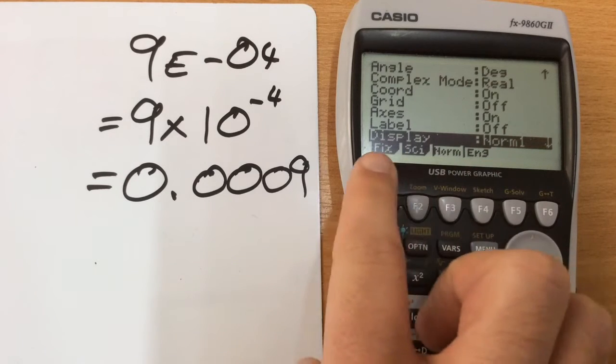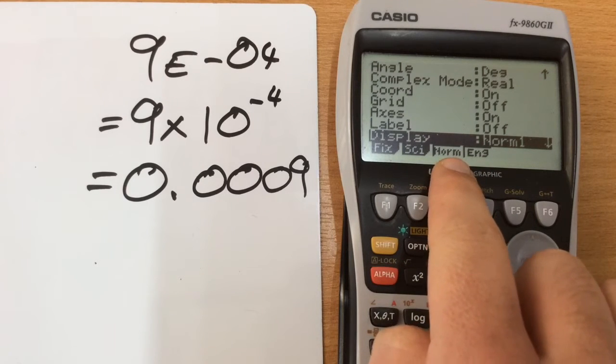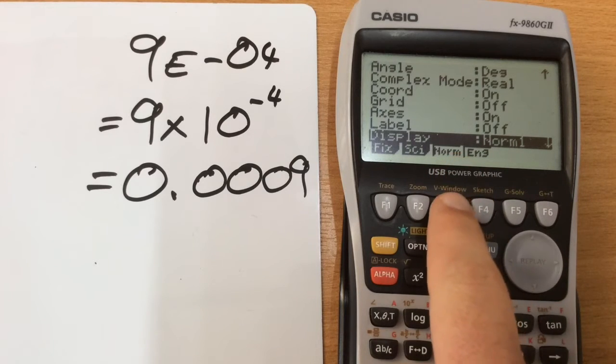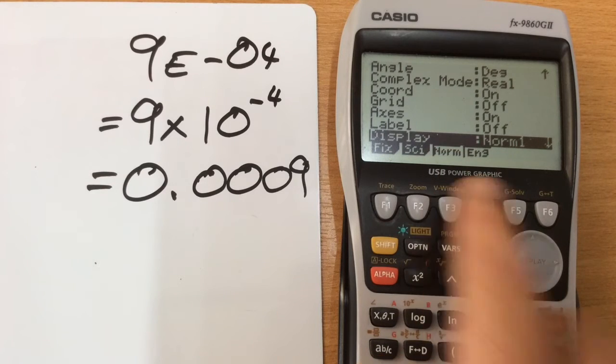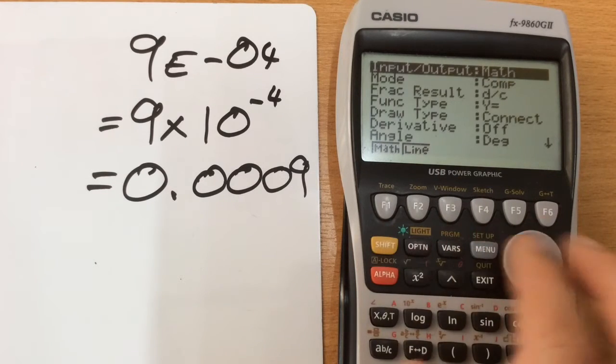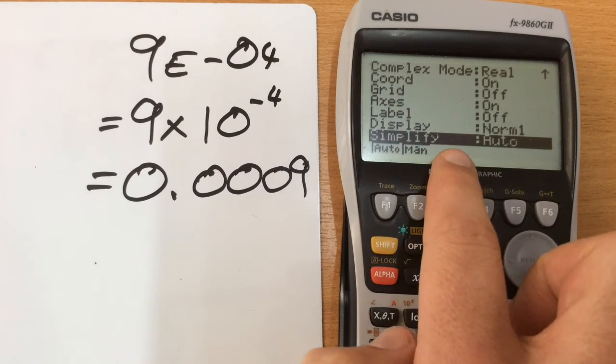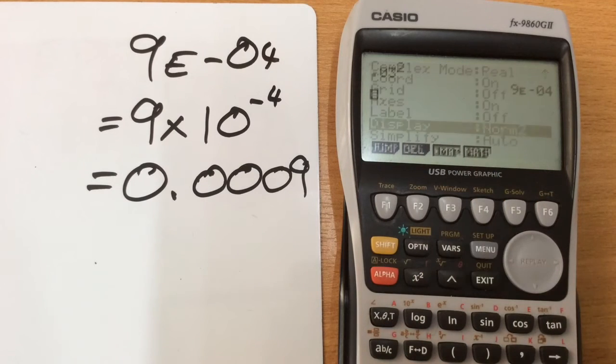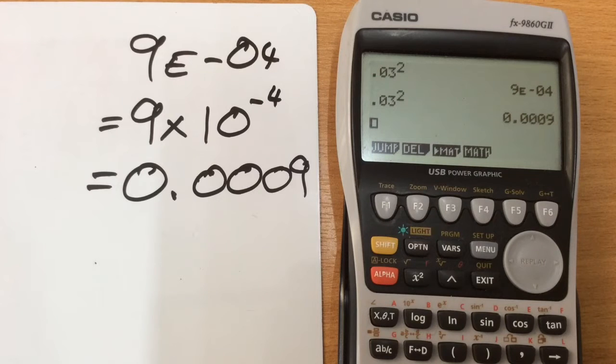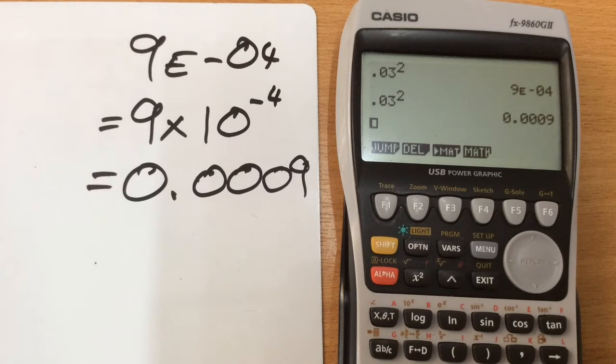We've got four different options here and they all do slightly different things. Norm is what we're actually usually using, normal mode and there are two different versions, norm1 and norm2 and these can just be cycled through by pressing the button below norm F3. So norm1 is what we had. We can go into the second to last one, display. Norm2 in this case, doing the same calculation, is going to give us the more usual decimal version.